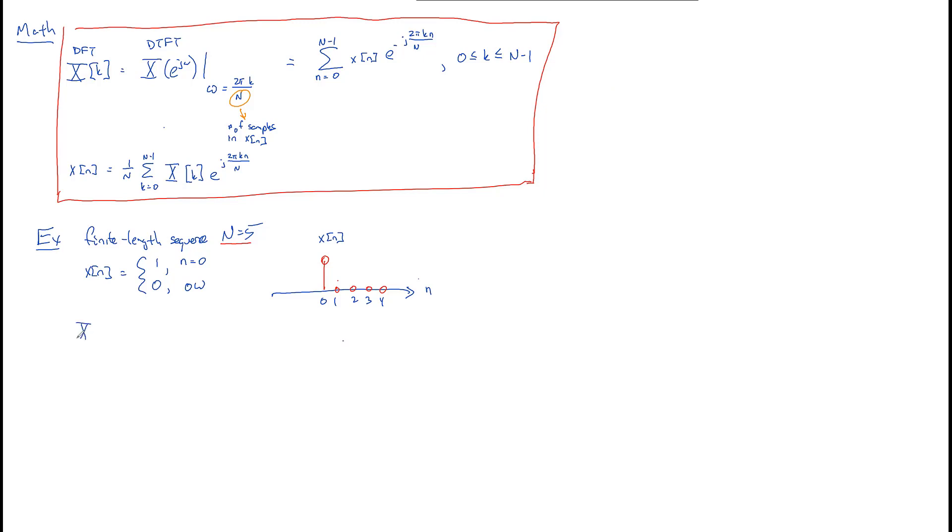The DFT of this sequence is going to be equal to the sum from n equals 0 to capital n minus 1 of x of n e to the minus j 2 pi k n over capital n. So, that's the definition, and now we'll plug in our values. When we plug in our values, it should be pretty clear that, for our sequence, we're only going to be summing between n equals 0 and 0. That's our only non-zero value.